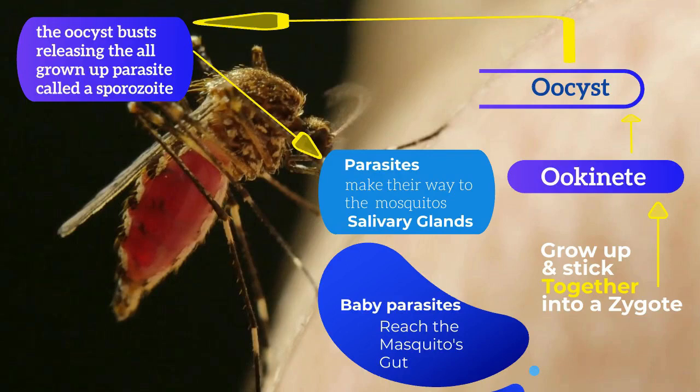When the mosquito bites the host, this parasite can then go into the host's blood. That's where the endoparasite loves to live.